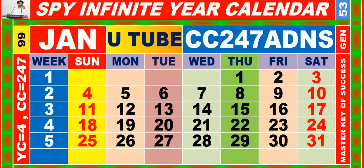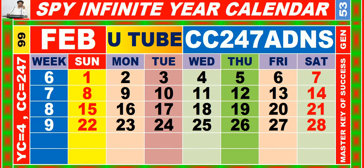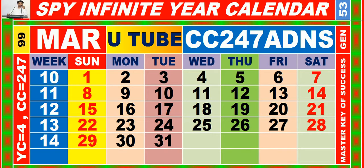Calendar for the month of January, having calendar code equal to 247. Calendar for the month of February, having calendar code equal to 247. Calendar for the month of March, having calendar code equal to 247.